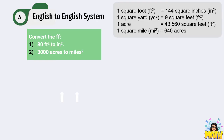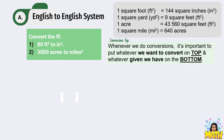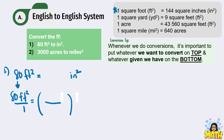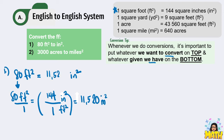Let's have English to English area examples, guided by the conversion table. Number 1: convert 8 square feet into square inches. Using 1 square foot equals 144 square inches, we copy the given and multiply it by the fraction with square inches on top and square feet on the bottom. 8 times 144 equals 1,152 square inches. Therefore, our final answer is 1,152 square inches.